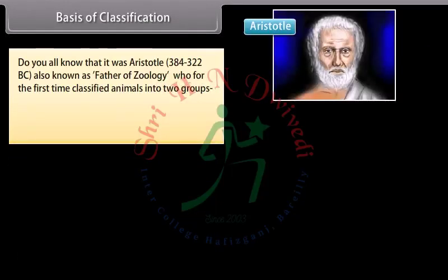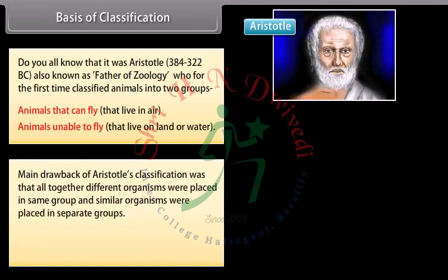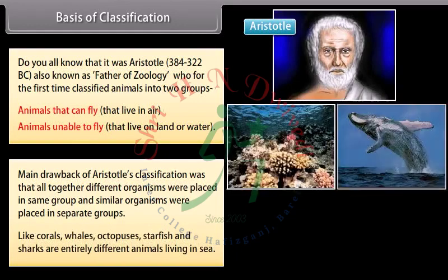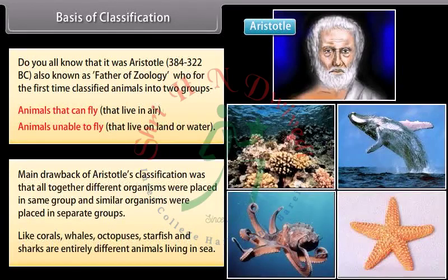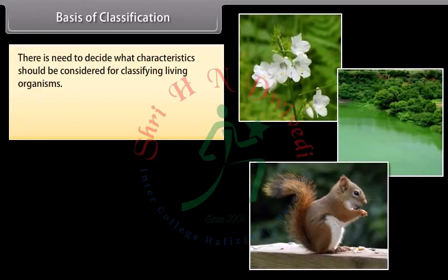It was Aristotle (384–322 BC), also known as the father of zoology, who for the first time classified animals into two groups: animals that can fly and live in air, and animals unable to fly that live on land or water. The main drawback of Aristotle's classification was that altogether different organisms were placed in the same group — like corals, whales, octopuses, starfish and sharks are entirely different animals living in the sea. So there is a need to decide what characteristics should be considered for classifying living organisms.